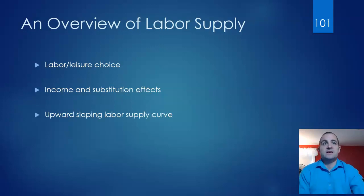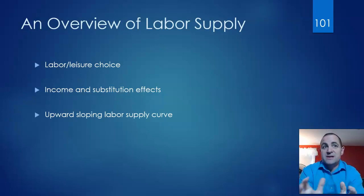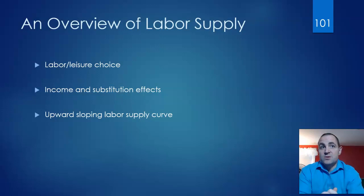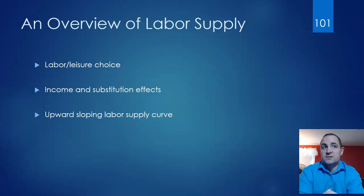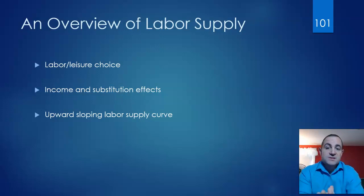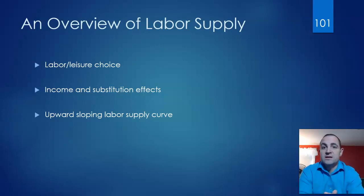Because of these income and substitution effects, you generally get an upward-sloping labor supply curve. With non-labor income, as the value of one's assets falls, the demand for all normal goods including leisure time falls. In general, you'll have that upward-sloping supply curve, and that curve will shift to the right or left depending on factors that increase or decrease your supply of labor.